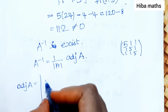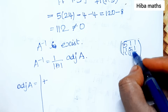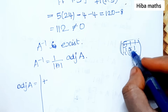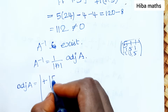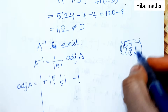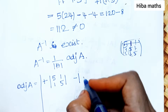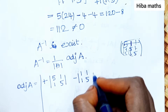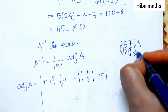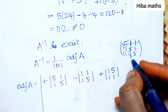To find the adjoint of A, we compute cofactors. First row, first column: 2 by 2 matrix [5,1;1,5]. First row, second column: minus, matrix [1,1;1,5]. First row, third column: plus, matrix [1,5;1,1].